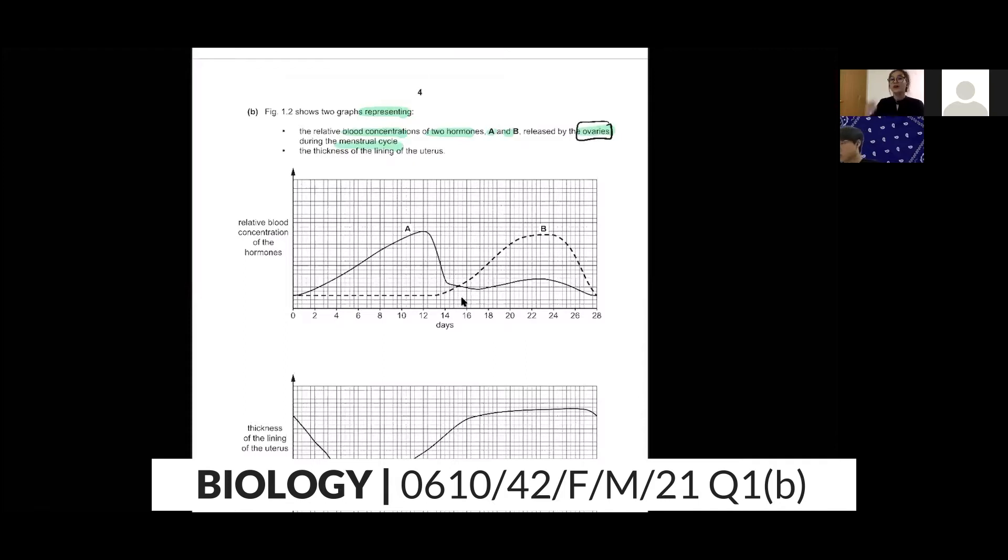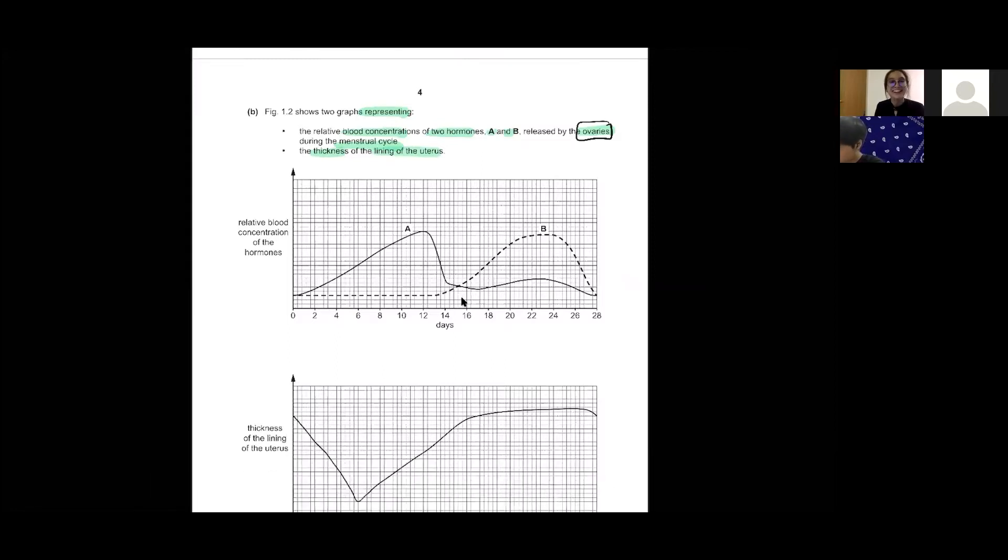Estrogen and progesterone. They are involved in maintaining the thickness of the lining of the uterus. Can you guys tell me which one is A? Yes, very good. Estrogen is A, correct. B will be progesterone. Remember you secrete the estrogen first, only then you secrete the progesterone.